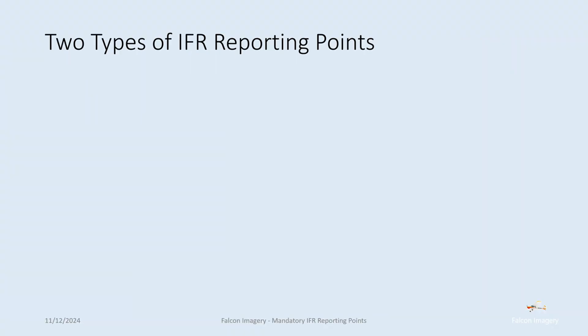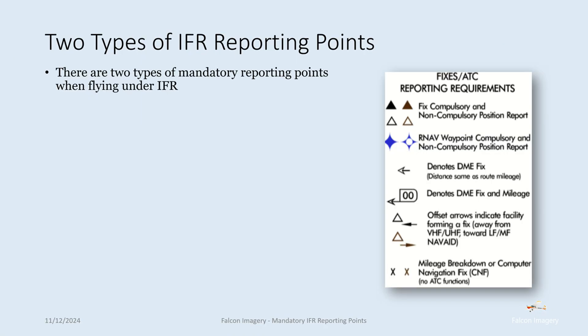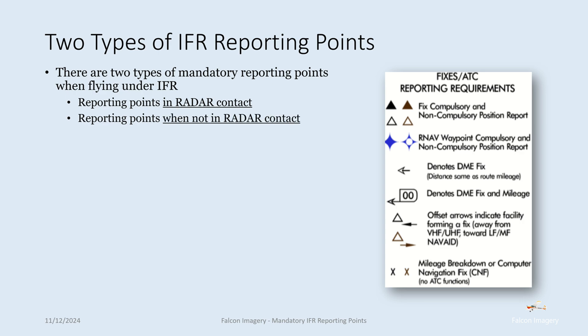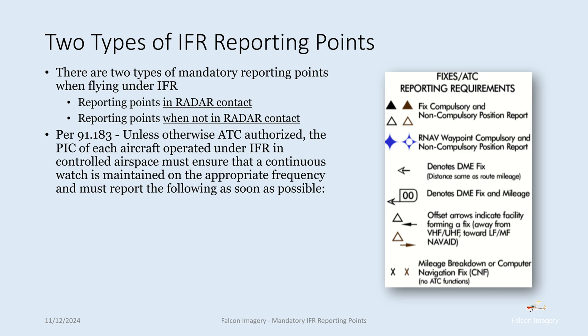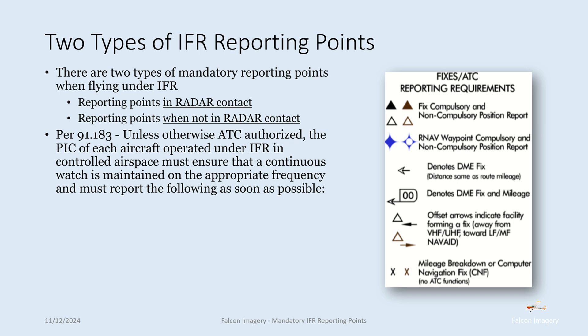Mandatory IFR reporting points. There are two types of mandatory reporting points when flying under IFR: those that are under radar contact and those that are not under radar contact. Per 91.183, unless otherwise ATC authorized, the pilot in command of each aircraft operated under IFR in controlled airspace must ensure that a continuous watch is maintained on the appropriate frequency and must report the following as soon as possible: time and altitude of passing each designated reporting point or the reporting points specified by ATC, except that while the aircraft is under radar control, only the passing of those reporting points specifically requested by ATC need be reported.